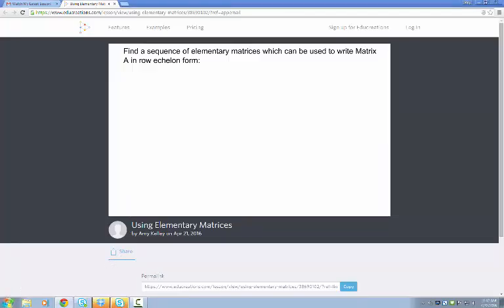In this video, we're going to find a sequence of elementary matrices which can be used to write matrix A in row echelon form, where matrix A is a 3 by 4 matrix, that is 3 rows and 4 columns.